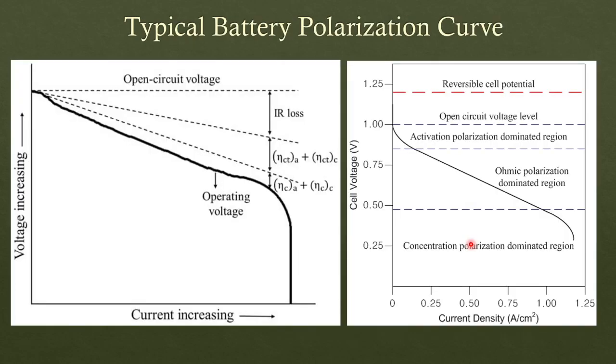We'll talk about Thevenin circuits in more detail in a separate video. So typical battery polarization curve is shown here. Another explanation about why open circuit voltage and terminal voltage differ. So there are various components, one of them is internal resistance, but to add to that there are other factors as well.